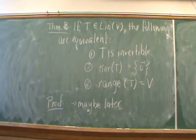So theorem three is an equivalent statement theorem. So if T is a linear operator, the following three things are equivalent. So T is invertible implies that the kernel of our linear transformation is only the zero vector. And that implies that the range of T is equal to V. So if any one of these three statements are true, then it implies the other two are true as well.